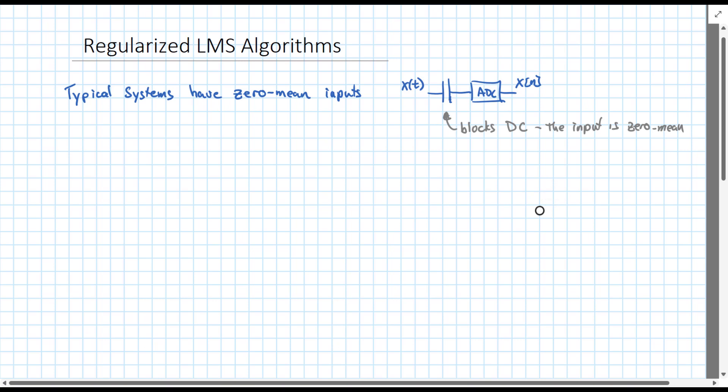A typical system will have some sensor in the real world, and then it has a blocking capacitor. This makes sure that along with maybe some bias circuitry added here to make sure that the voltage levels are correct, the signal goes into the ADC with the DC voltage blocked. What we get out is x of n.